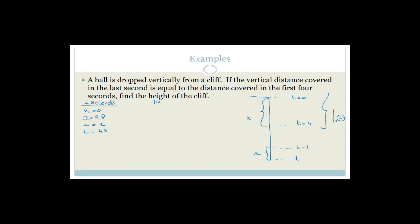I want to stress this: if you're dropping something from a cliff or jumping from an airplane with a parachute that fails, your final velocity is not zero. I know you hit the ground and stop moving, but the reason you stop is because the ground has stopped you — not because your final velocity was zero. If your final velocity were zero, you'd hover just above the ground and never touch it. The reason there's a dent in the ground when something falls is because the ground has stopped it. Your final velocity is not zero.